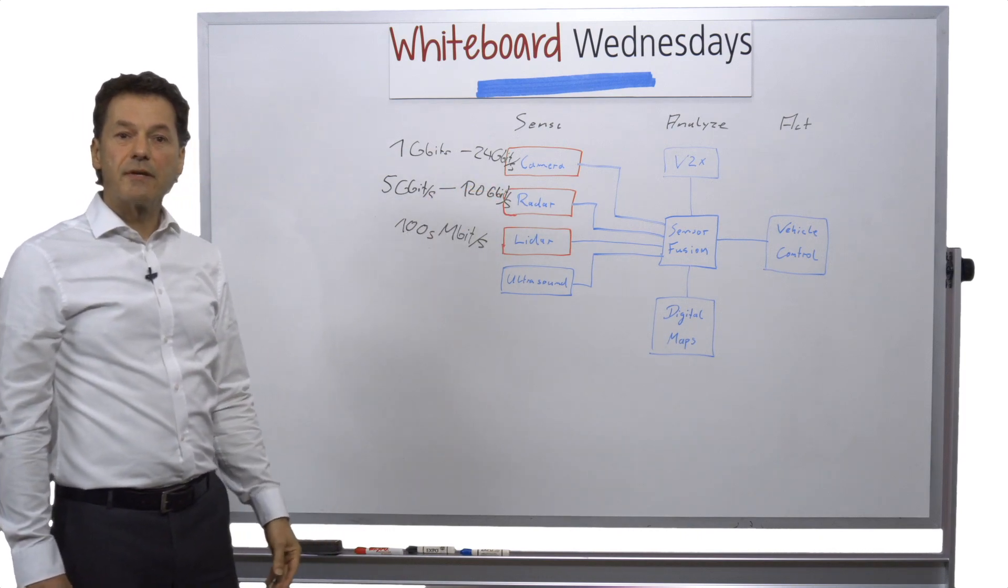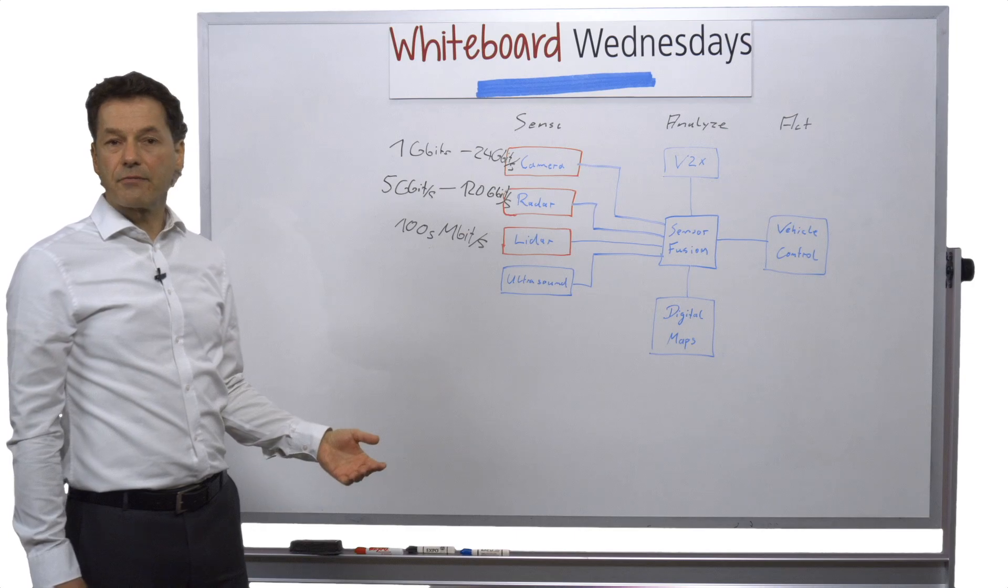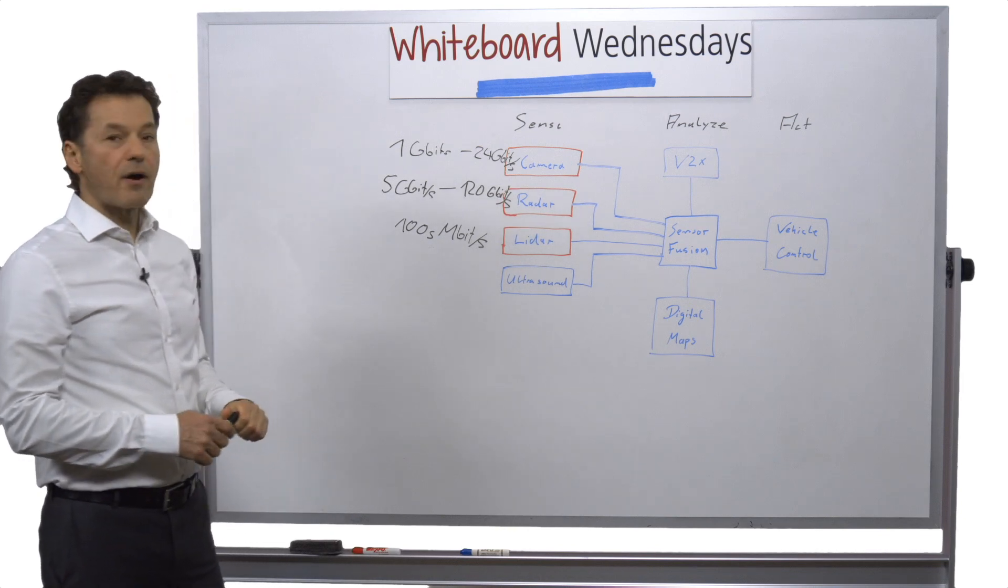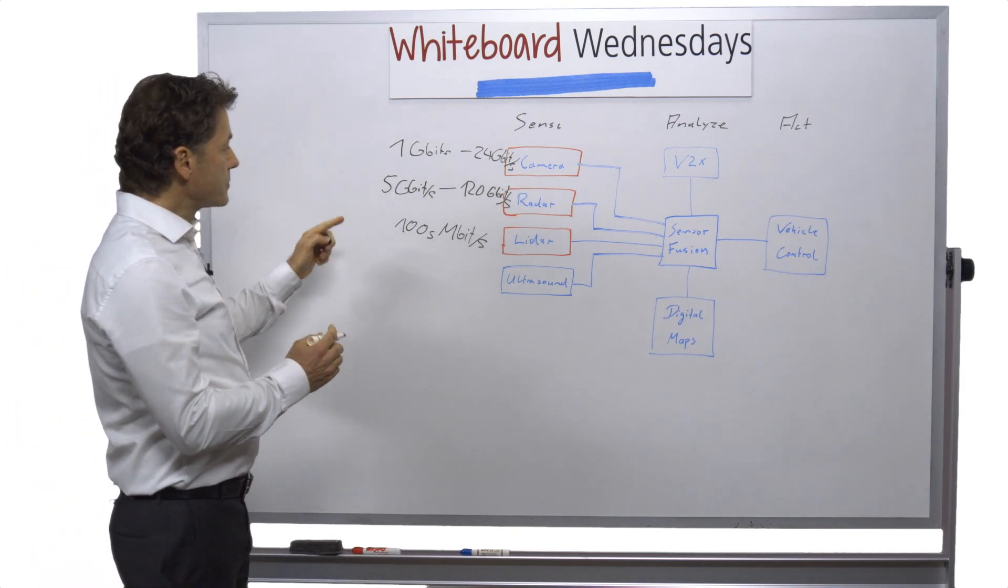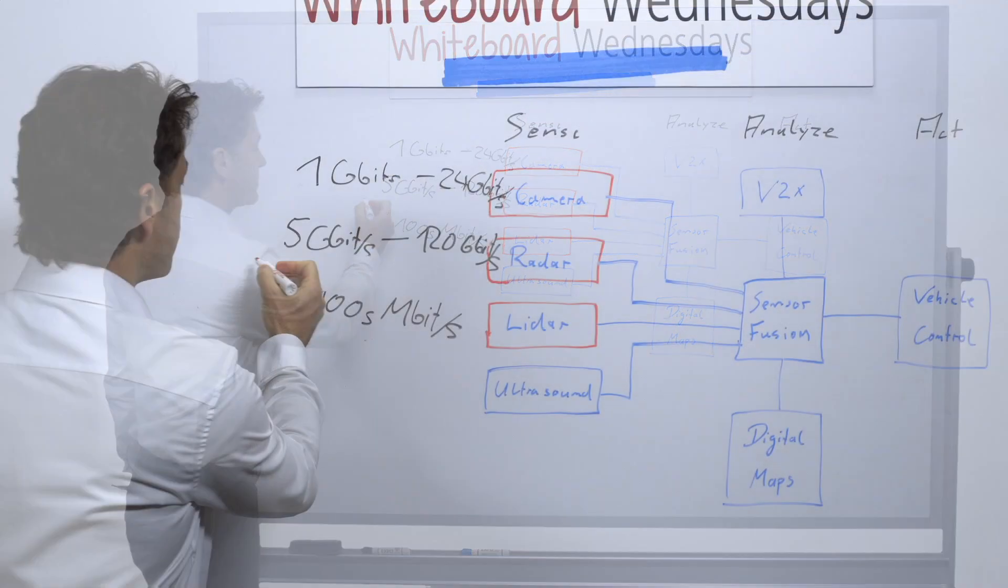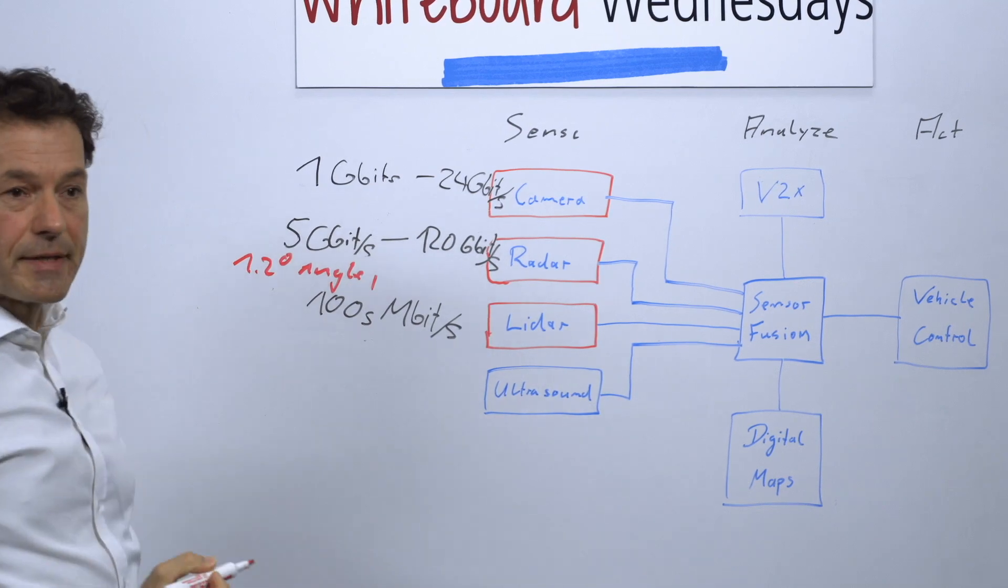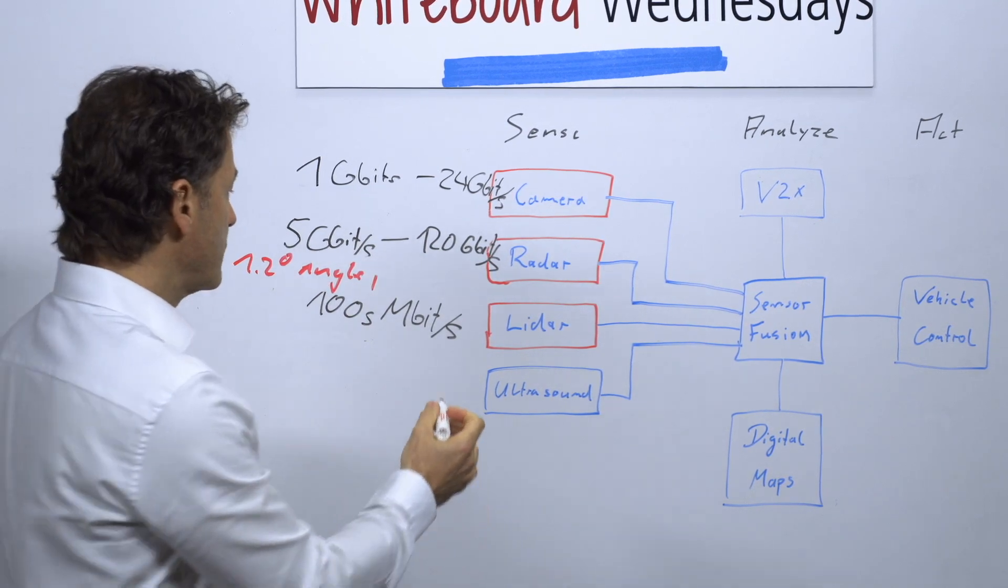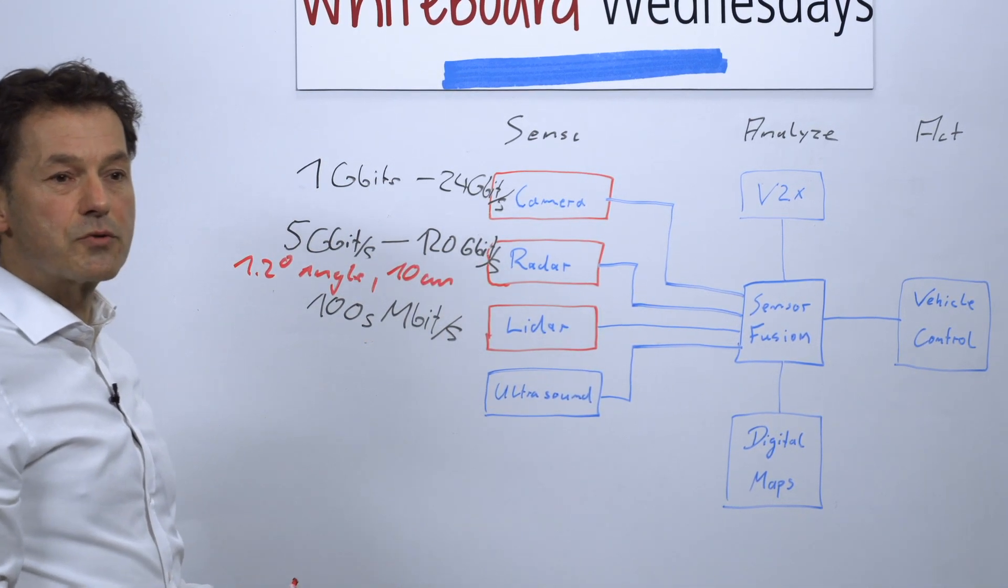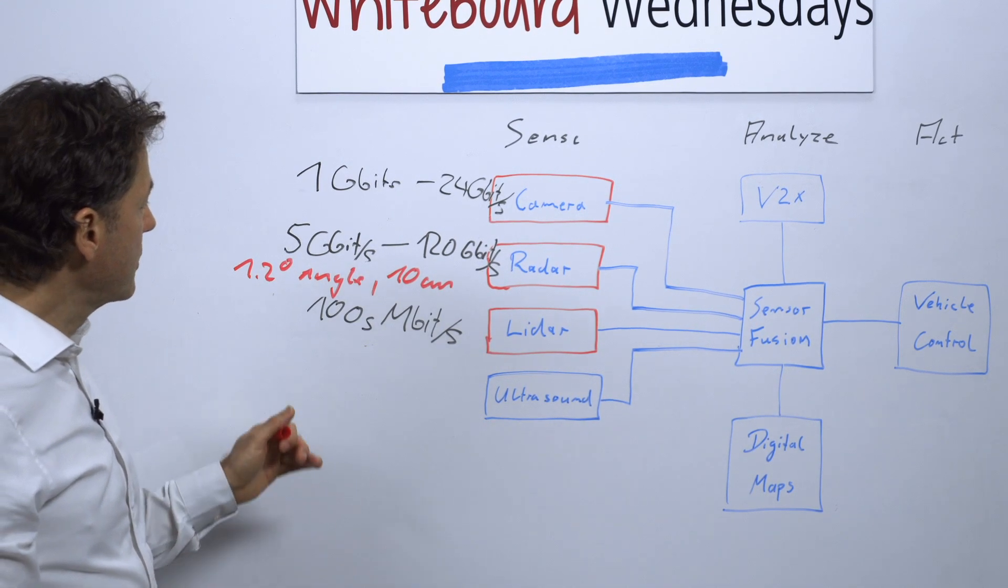On the radar side, I mentioned that due to the 79 GHz band, there's much higher resolution possible. On the radar side, we can expect an angular resolution of 1.2 degrees and a range accuracy of about 10 centimeters using, for instance, frequency modulated continuous wave radar systems or even fast chirp sequence radar systems.